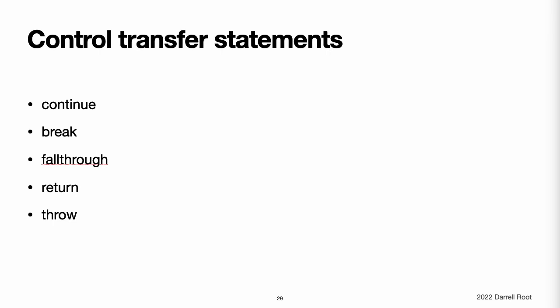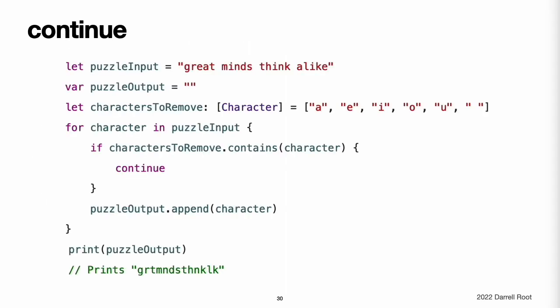Control transfer statements change the order in which your code is executed by transferring control from one piece of code to another. Swift has five control transfer statements: continue, break, fallthrough, return, and throw. The continue statement tells a loop to stop what it is doing and start again at the beginning of the next iteration through the loop — it says 'I am done with the current loop iteration without leaving the loop altogether.' This example removes all vowels and spaces from a lowercase string to create a cryptic puzzle phrase; the code calls the continue keyword whenever it matches a vowel or a space.